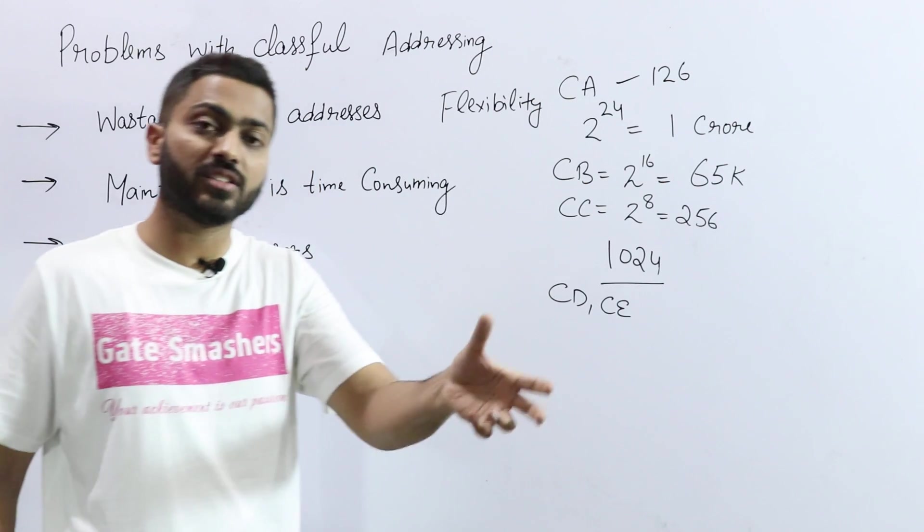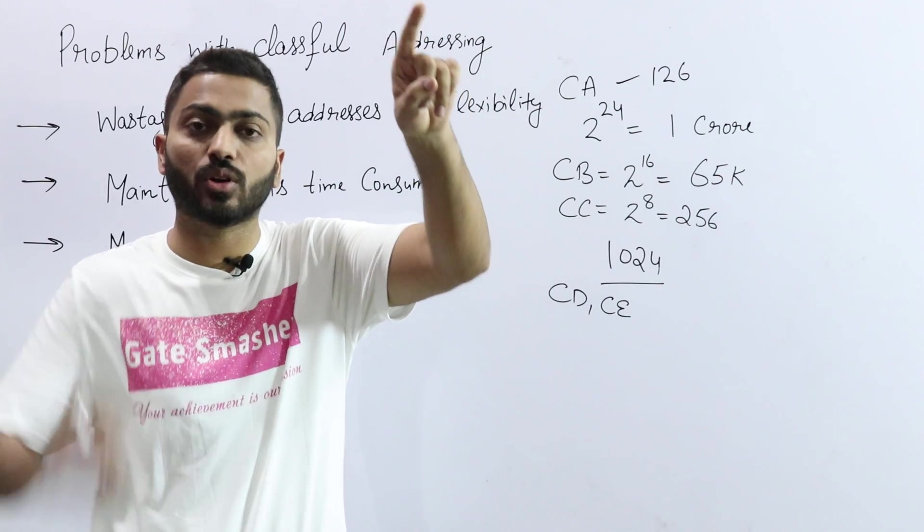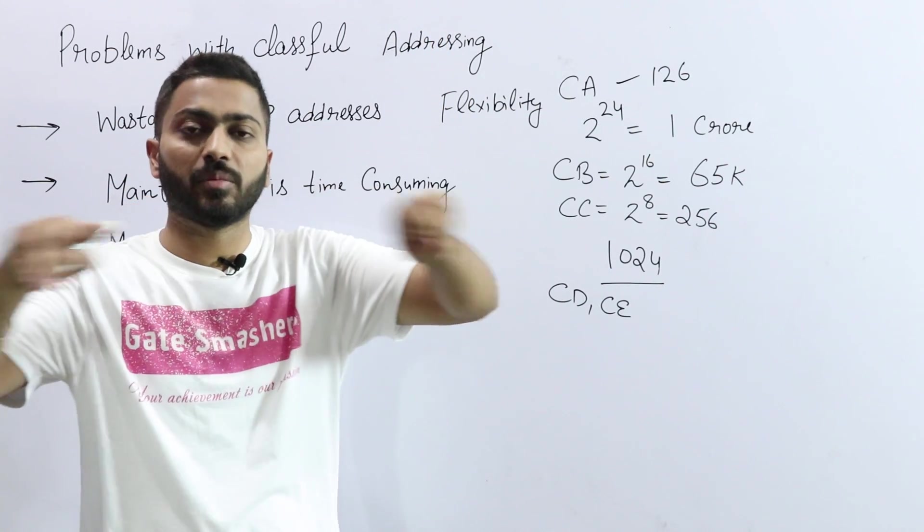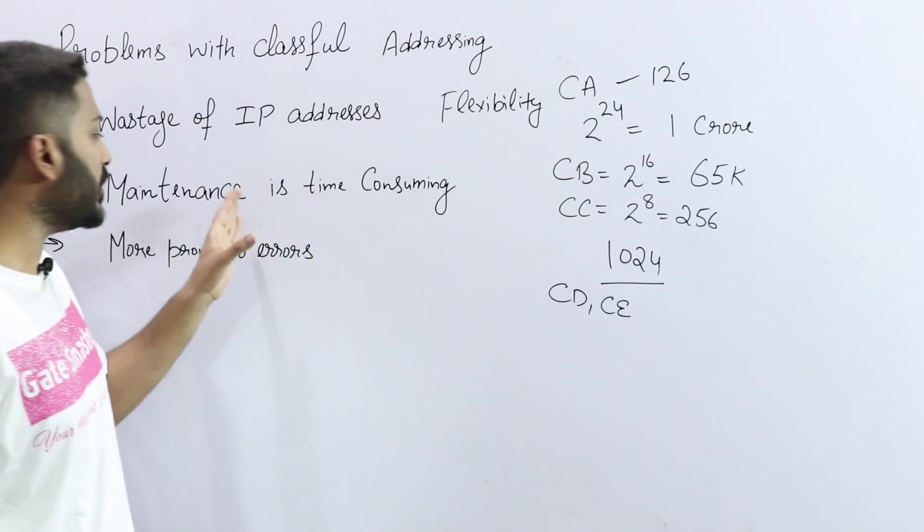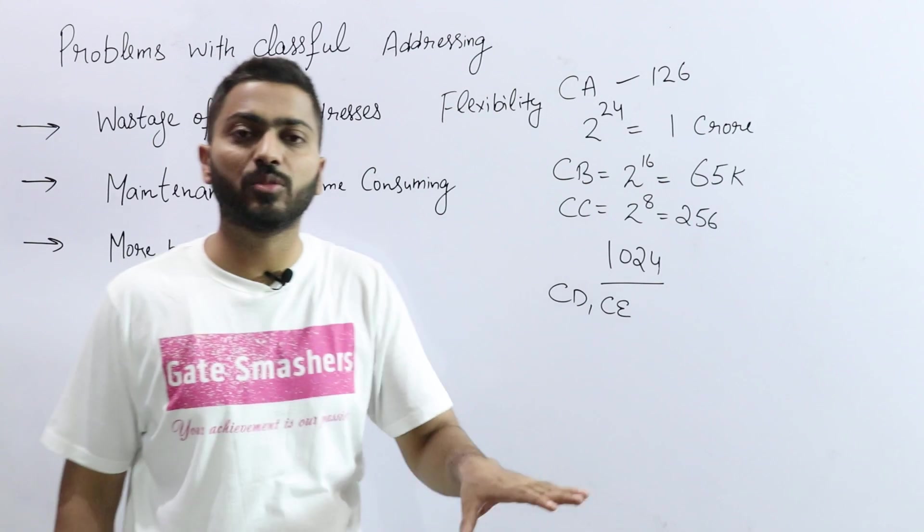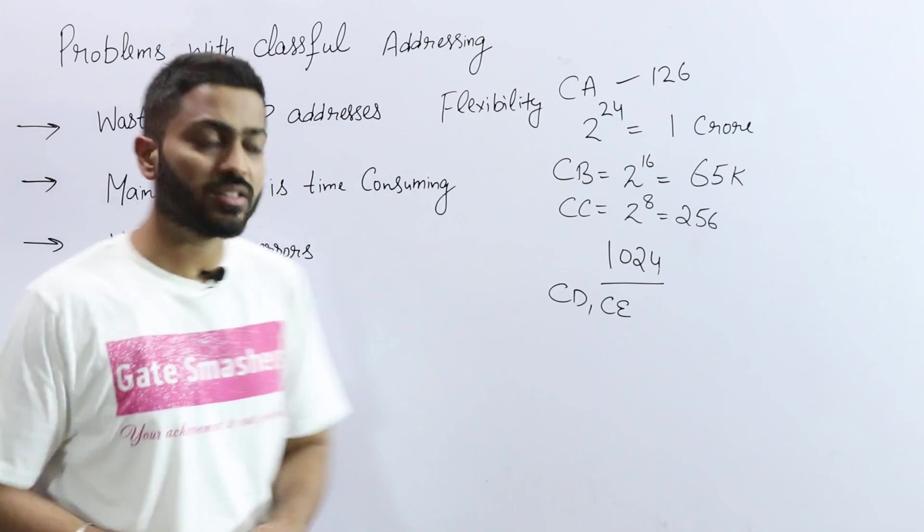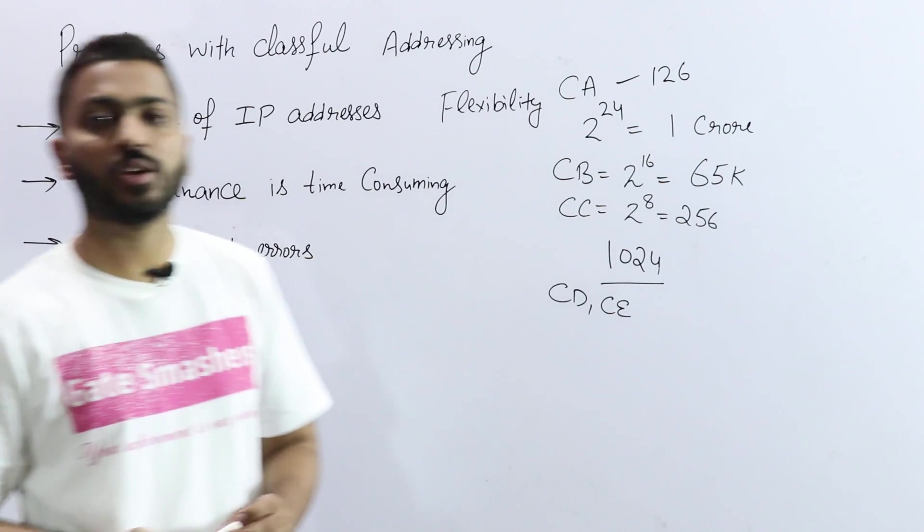But I'm not saying to take a small network. If an organization's demand is for a big network, then a big network should be taken. But that big network can logically be converted into subnets, which gives advantages - maintenance is not time consuming, errors are reduced, and security is better provided. But in classful addressing, there is a security problem.